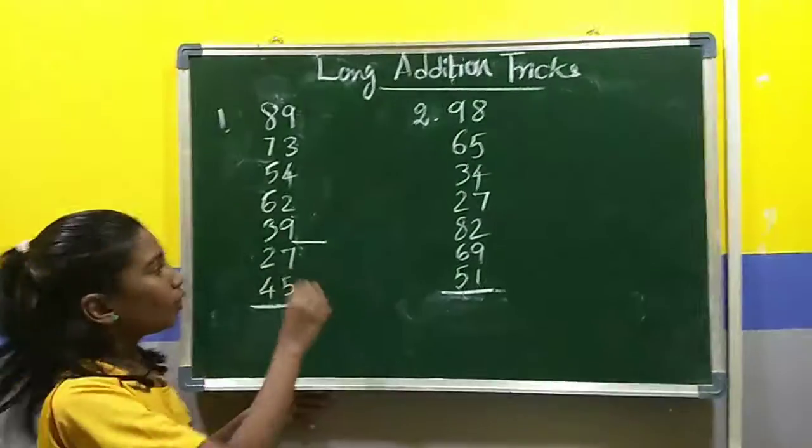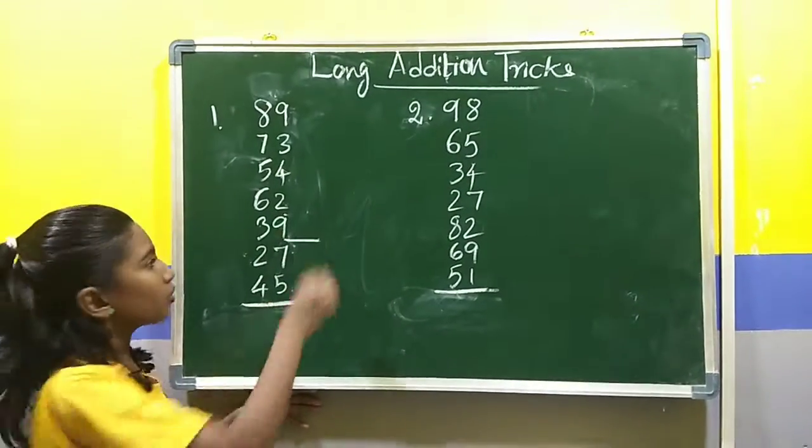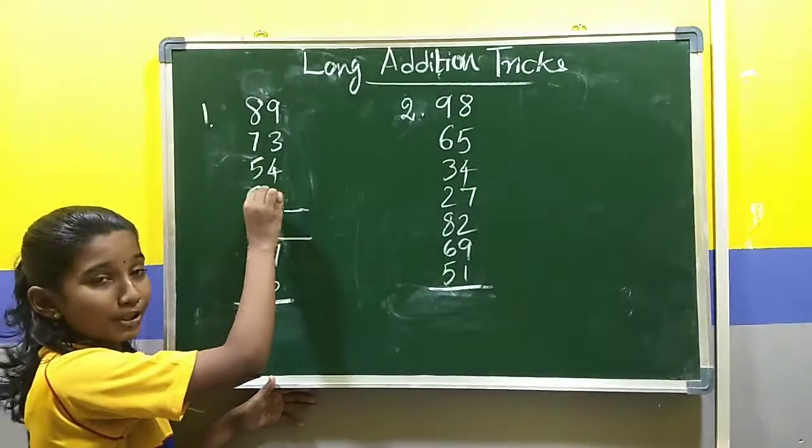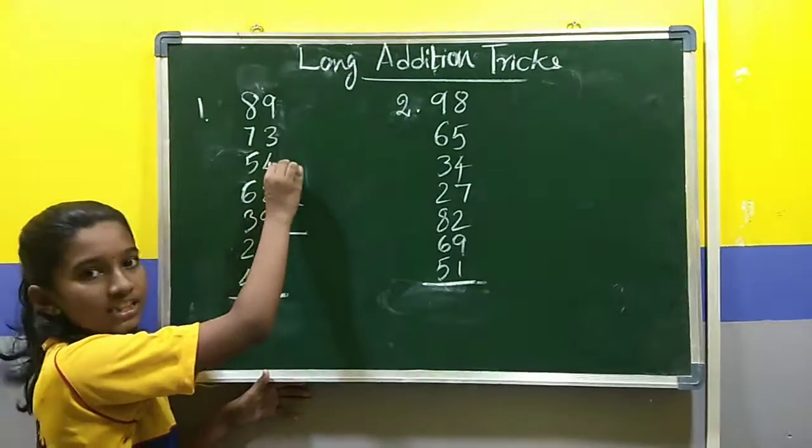5 plus 7, 12. 2 is carried over here. 9 plus 2, 11. 10 is dropped here. Again, 1 plus 3. 1 plus 2, 3. 3 plus 4, 7.